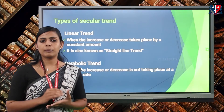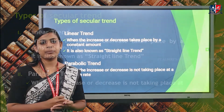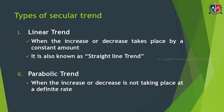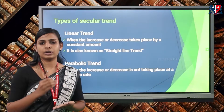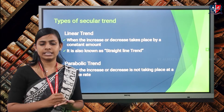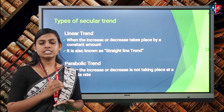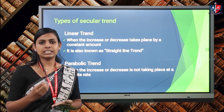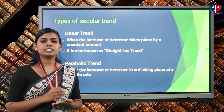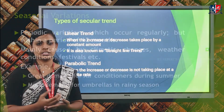There are two types of secular trend: linear trend and parabolic trend. In a linear trend, the percentage change or the absolute change is a constant amount — if a variable increases by 10 this year it will increase by 10 again the next year. If the trend is not increasing by a constant amount, it is known as a parabolic trend.